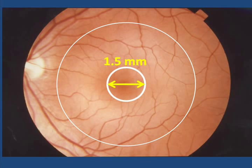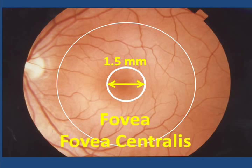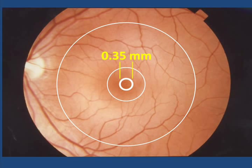Near the center of the macula is a small indentation or pit called the fovea or fovea centralis. This region has a diameter of about a millimeter and a half, about the size of the head of a pen. At the bottom of this pit is an even smaller area, about 0.35 millimeters in diameter, called the foveola.